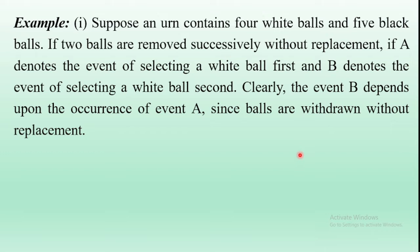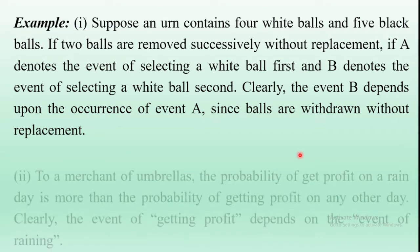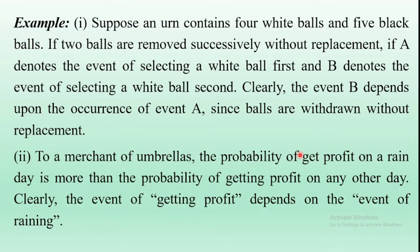One more example of conditional probability: for a merchant of umbrellas, the probability of getting profit on a rainy day is more than the probability of getting profit on any other day. Here there are two events: the event of getting profit and the event of rain. Clearly, the event of getting profit depends on the event of raining.